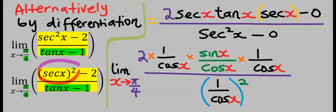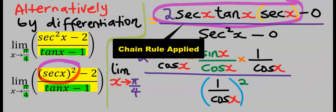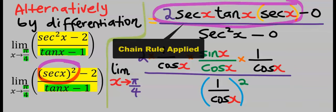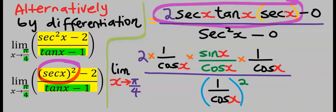Differentiate sec x all squared, and your answer is two sec x tan x multiply sec x. Next, differentiate two, and your answer is zero.